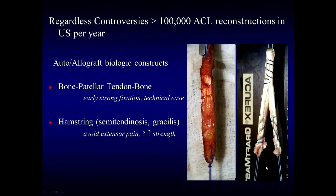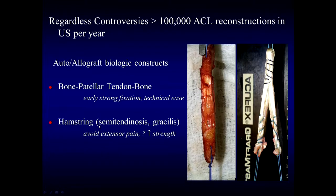Despite that controversy, over 100,000 anterior cruciate ligament reconstructions are performed surgically in the U.S. per year. These are typically performed with autograft or allograft biologic constructs. The two most common are bone patellar tendon bone constructs, harvested from the middle third of the patellar tendon with bone plugs from the inferior pole of the patella and the tibial tubercle region, and hamstring grafts obtained from harvesting the distal portions of the semitendinosis and gracilis tendons, folded upon one another and sutured to form a four-bundle construct.